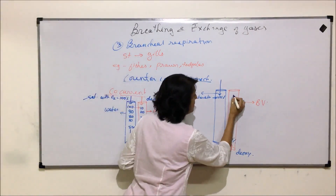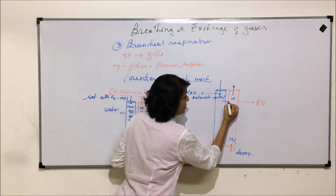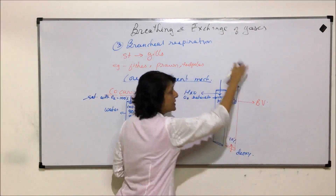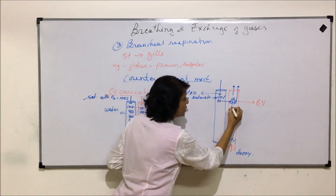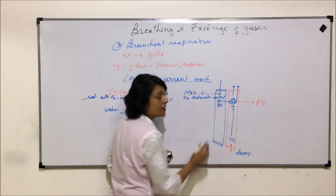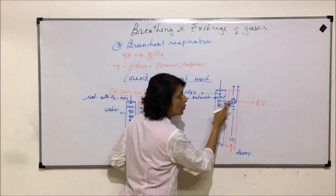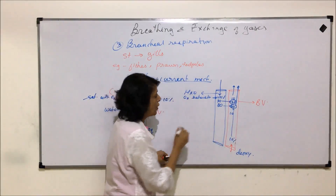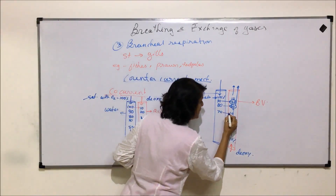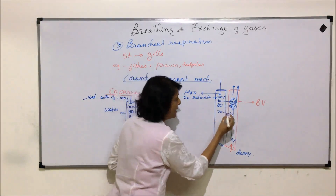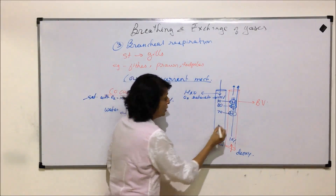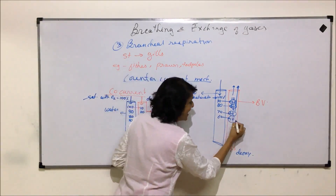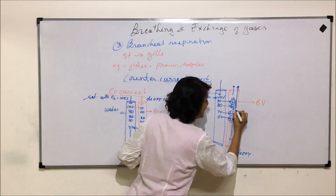The blood enters with 10% oxygen and flows opposite to water. From higher to lower concentration, diffusion occurs: water becomes 90%, blood becomes 20%. Fresh blood coming in has 10%; the water has 80% — again, higher to lower, so diffusion occurs. The next point: fresh blood is 10%, water is 70% — still a concentration gradient. Oxygen diffuses from water to blood. Further along, fresh blood is 10%, water is 60% — still a gradient, so diffusion continues.